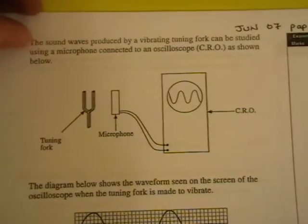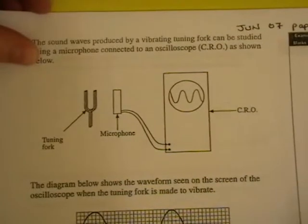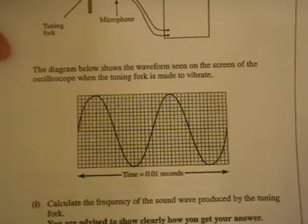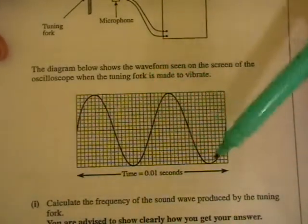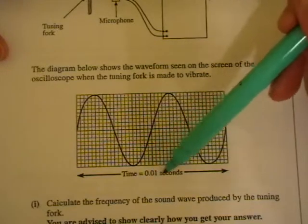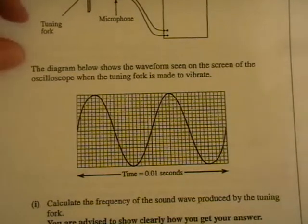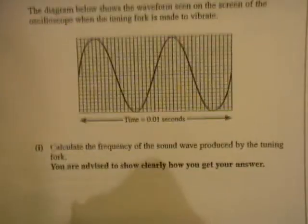So down below, the diagram shows the waveform seen on the screen of the oscilloscope when the tuning fork is made to vibrate. This is a much larger diagram. You can see it gives you a time right across here, it tells you the time is worth 0.01 seconds. Now, the frequency is the number of waves it makes in a second. So I'll just write that down to remind you: frequency is the number of waves.